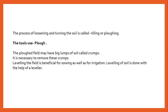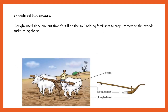Loose soil also mixes uniformly with the fertilizers. The process of loosening and turning the soil is called tilling or plowing, and the tool used is the plow. When plowing is done, big lumps of soil called crumbs remain, and it is necessary to remove them. Leveling of the field is also beneficial for sowing as well as for irrigation, and leveling is done with the help of a leveler.